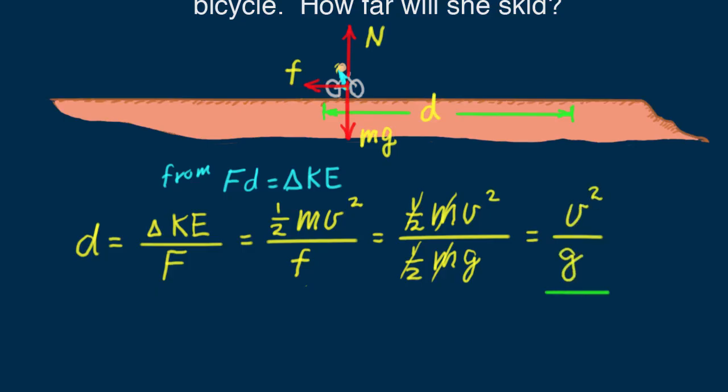So after canceling M and the factors of one-half, we get... Our problem is solved. She slides a distance V squared over G, which hopefully is less than the distance to the missing road surface. Does the equation make sense? The speed squared tells us that if she were traveling twice as fast, her distance of skid would be four times as far. That seems right, for twice the speed in the kinetic energy equation tells us kinetic energy is four times as much.